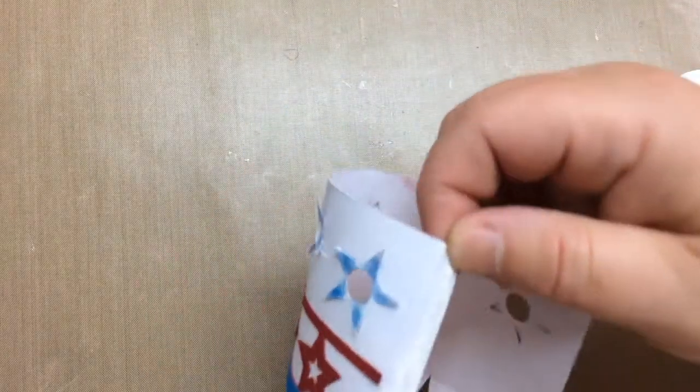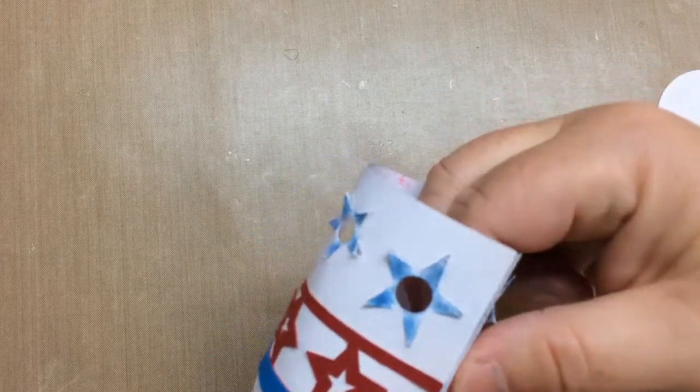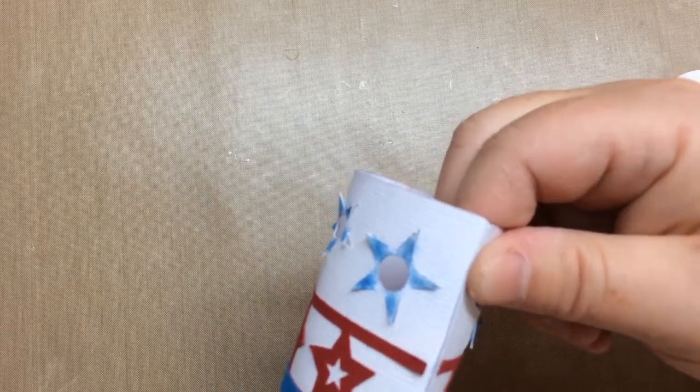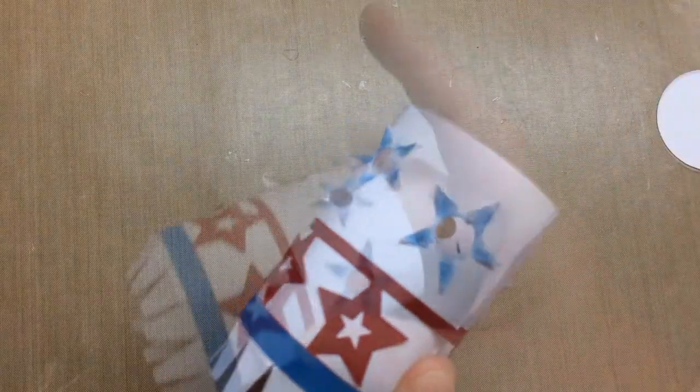Then glue the side tab to the other side underneath so it's not visible and secure it with your fingers. I actually kind of hold it a little bit to make it more circular.